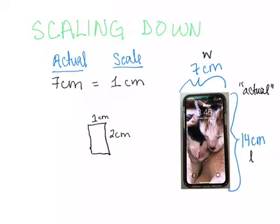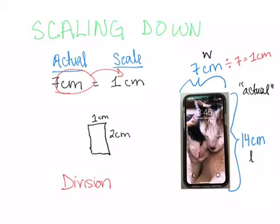How did I do this? Well, I used division. So if my actual every 7 centimeters is 1 centimeter, then I'm taking my 7 centimeters dividing that by 7, and found I got 1 centimeter. And my 14 centimeters, I'm dividing that by 7 to get 2 centimeters in scale.